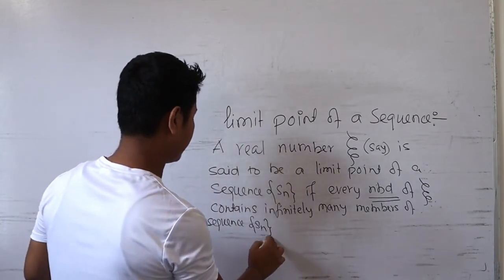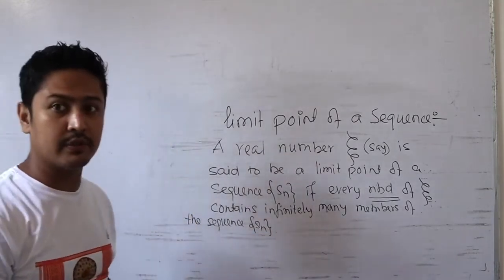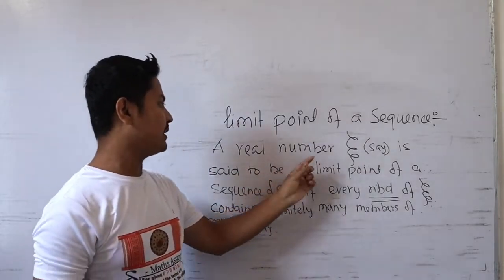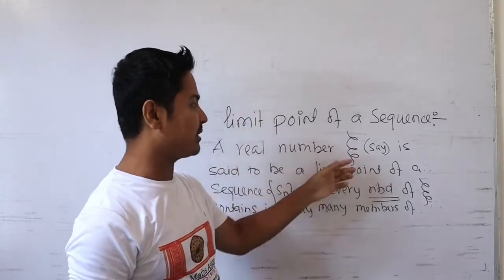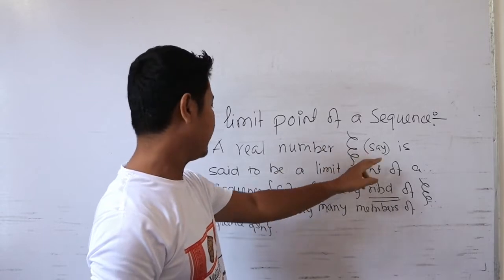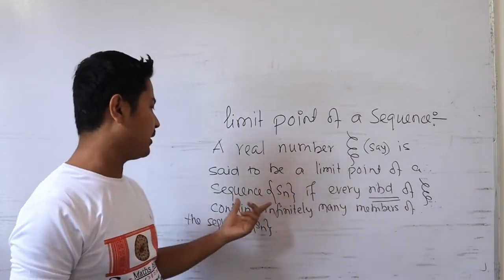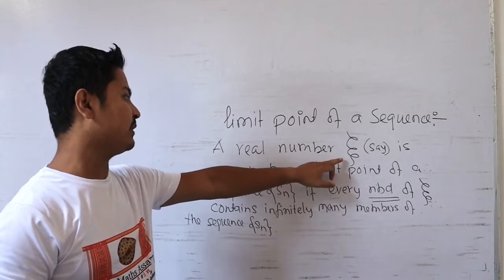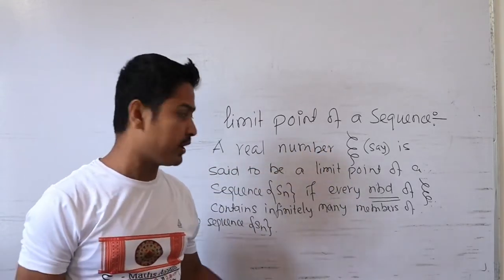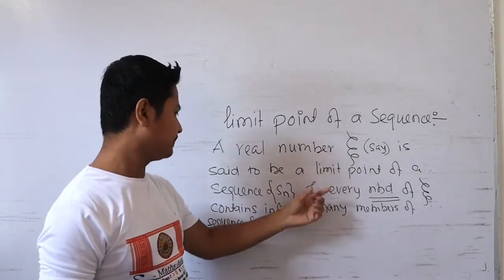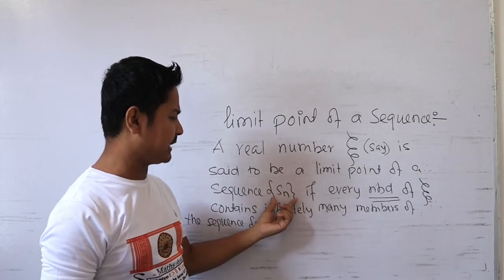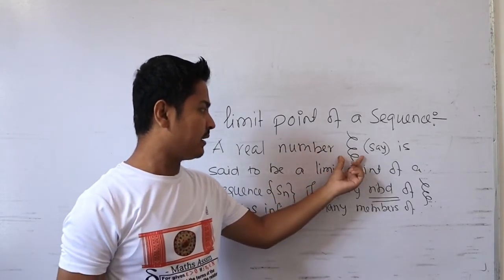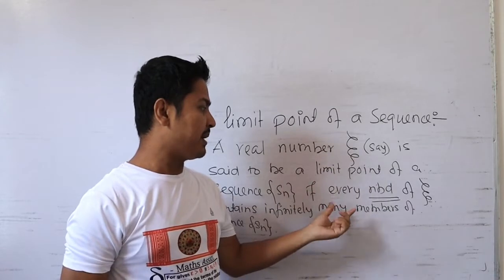Let's try to understand the definition of limit point. So we consider an arbitrary real number ξ. This ξ is said to be a limit point of a sequence Sn. So ξ is a real number, and Sn is an arbitrary sequence.